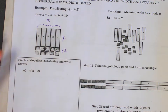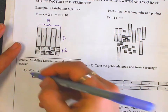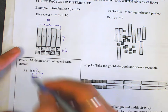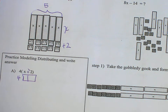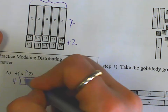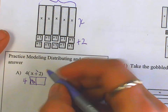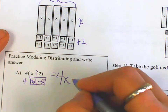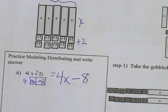Now I'll do the area model to distribute example a: 4 times the quantity x plus negative 2. There are two terms. The four touches the parentheses, so four times x is 4x, and four groups of negative two is negative eight. So this is 4x plus negative 8, or 4x minus 8. Subtraction is adding the opposite, so I can write it either way.